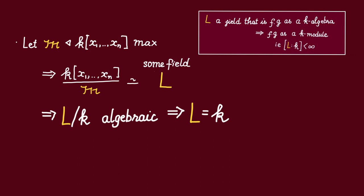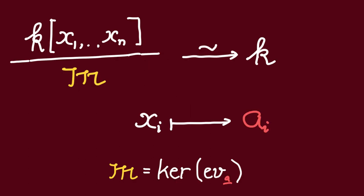Right, so since this field L is a finitely generated k-algebra, by this theorem here, we know that L must be algebraic over k. But we have assumed that k is algebraically closed, so we know that L must be equal to k. In other words, we have an isomorphism from this quotient to k.